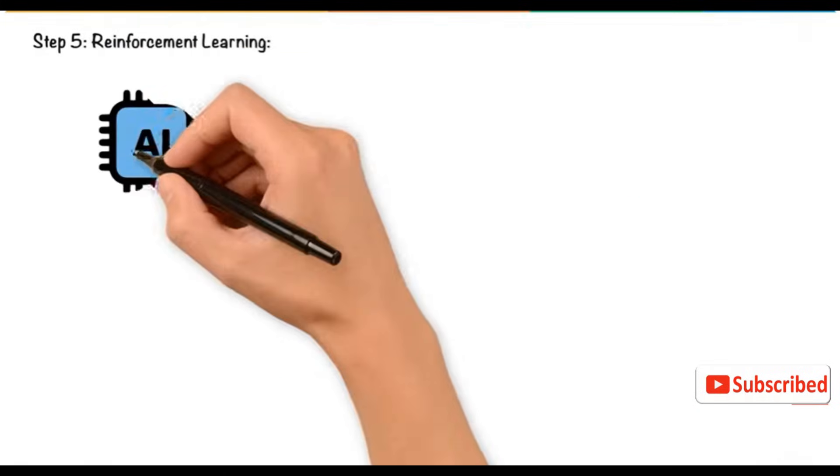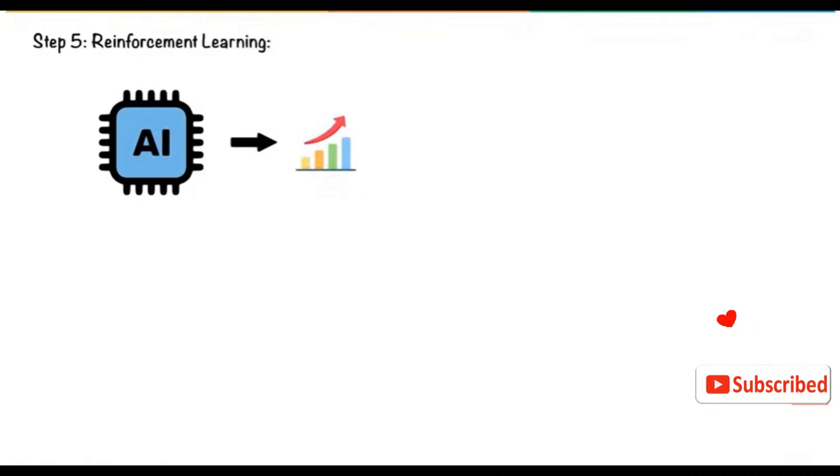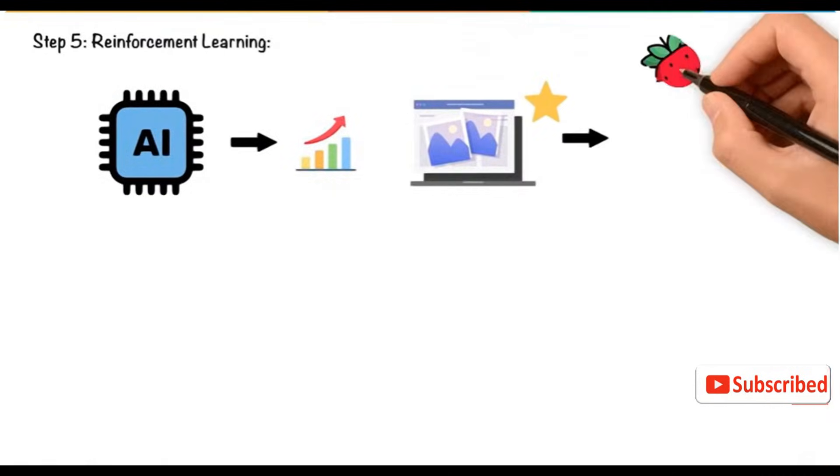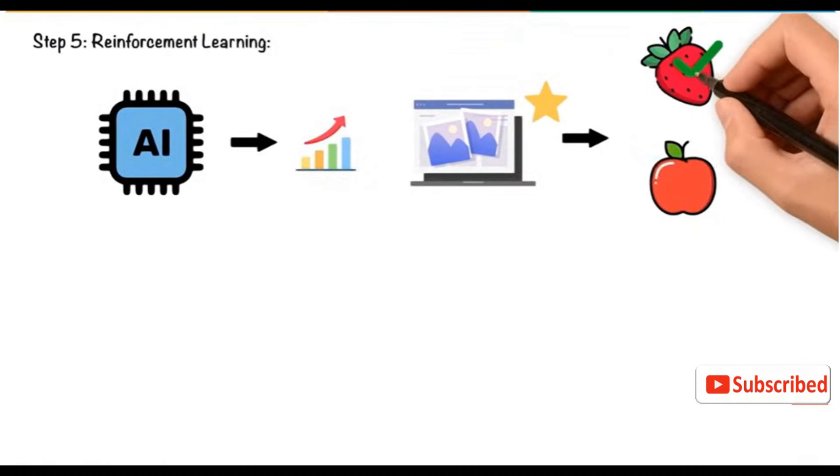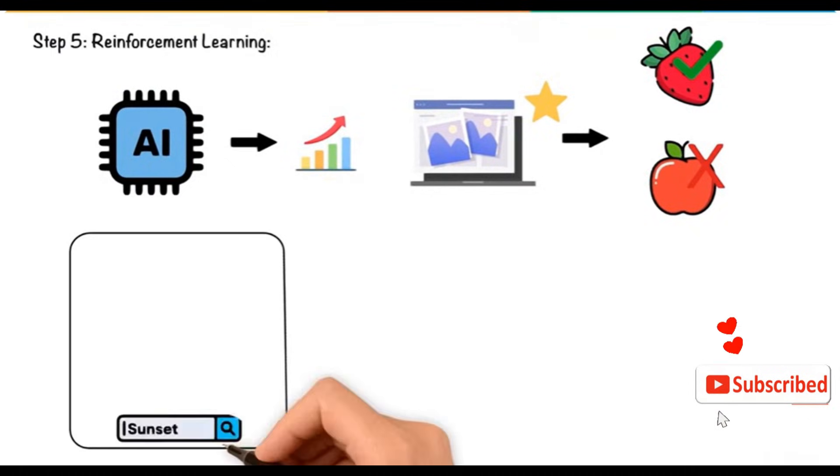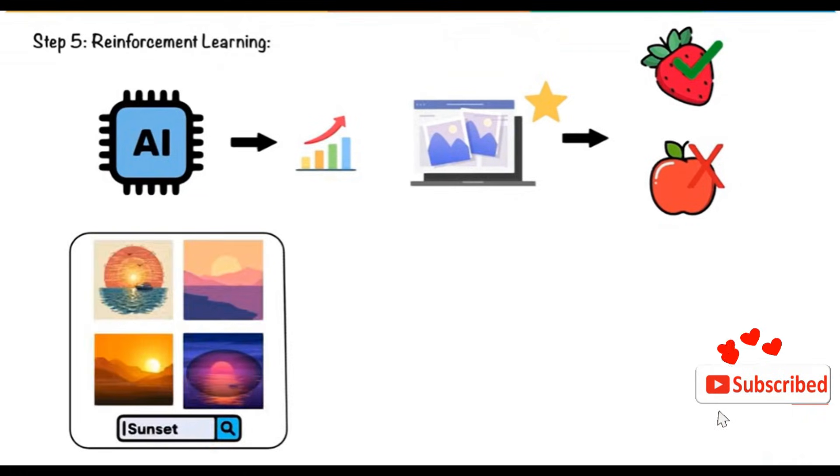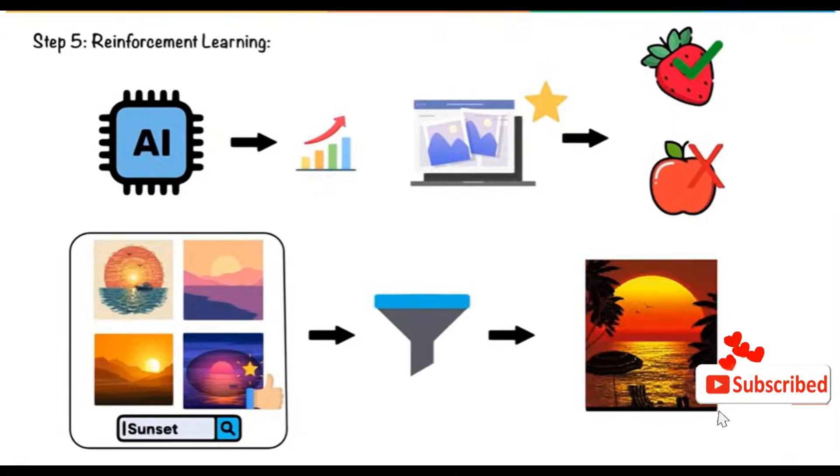Reinforcement Learning: Reinforcement learning further enhances the AI's ability. The model is rewarded when it generates accurate images and corrected when it makes mistakes. For example, when Tina describes a sunset and the AI produces a vibrant sunset image, it receives positive reinforcement. Over time, this method refines the model's ability to generate better images.